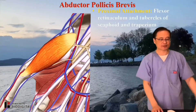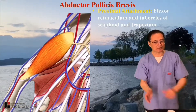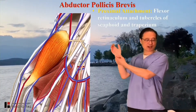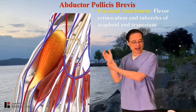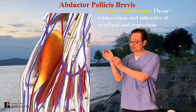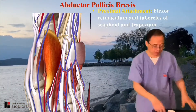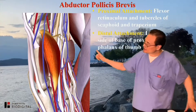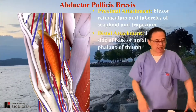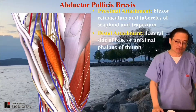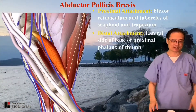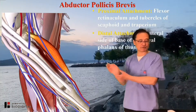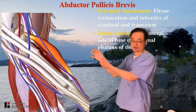Proximal attachment: flexor retinaculum, and tubercles of scaphoid and trapezium, right nearby there. The distal attachment, as you can see, is the lateral aspect of the proximal phalanx of the thumb.